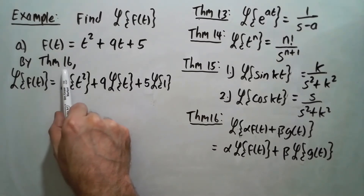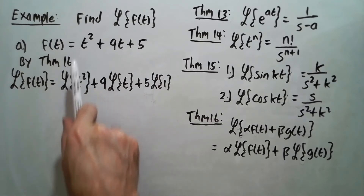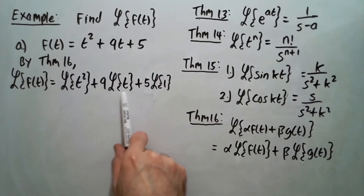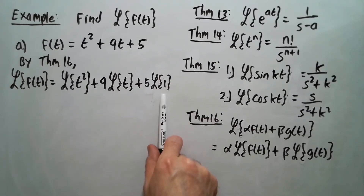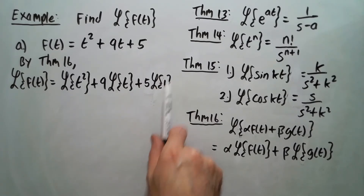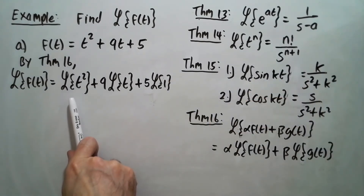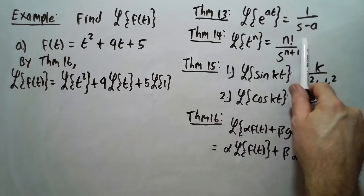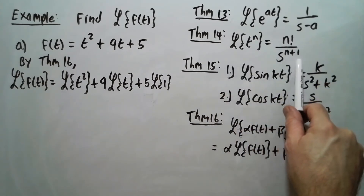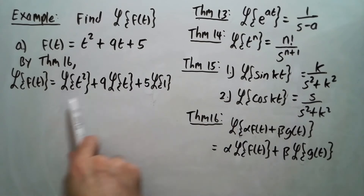Applying Theorem 16 means we can distribute the Laplace, so it'll be Laplace of t squared plus 9 times Laplace of t plus 5 times Laplace of 1. Now we're going to use Theorem 14 to figure out each of these, because Theorem 14 says that the Laplace of t to the n is n factorial over s to the n plus 1. On the first term, our n is 2.